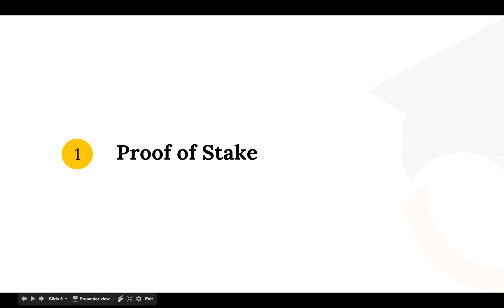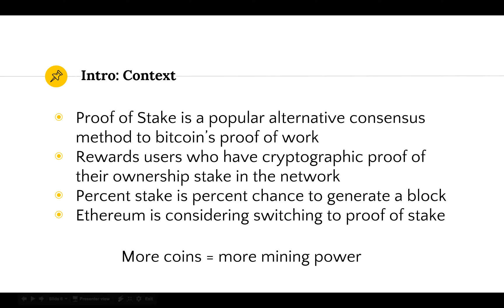So now we'll talk about proof of stake. Proof of stake is a popular alternative consensus method to Bitcoin's proof of work. It rewards users who have cryptographic proof of their ownership stake in the network. The network can tell which address cryptographically owns the coins associated to their wallet, and based on their percentage of coins, they receive a percentage of the block. The percent stake is the percent chance to generate a new block — so the more coins you have, the more mining power you have.